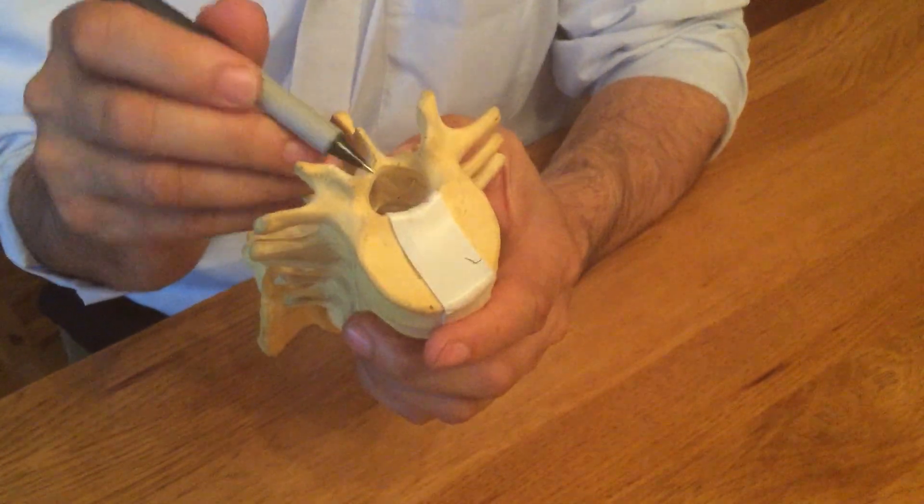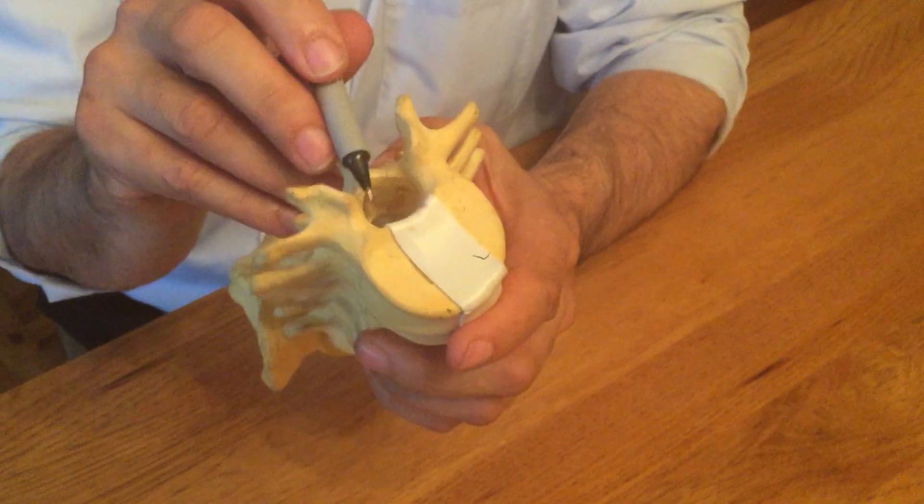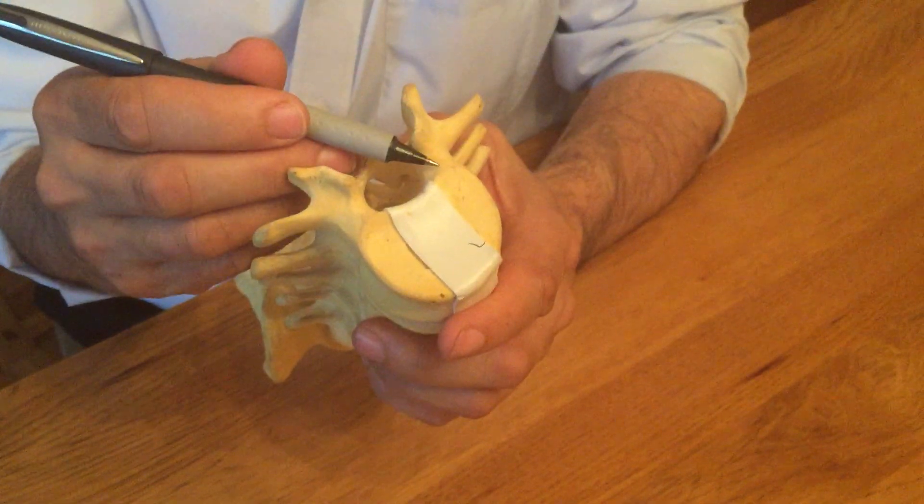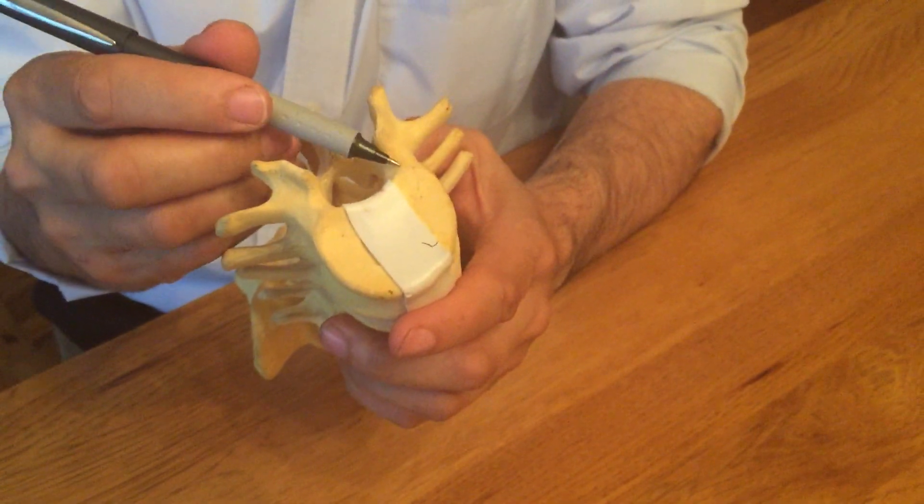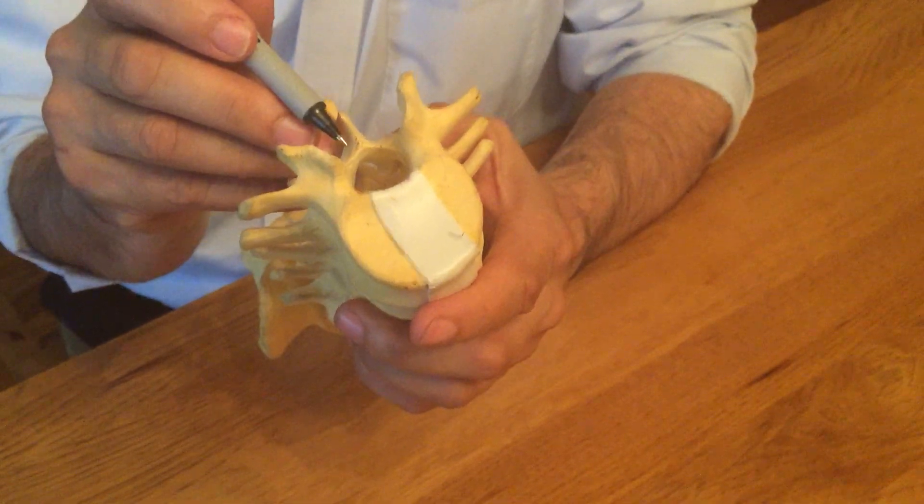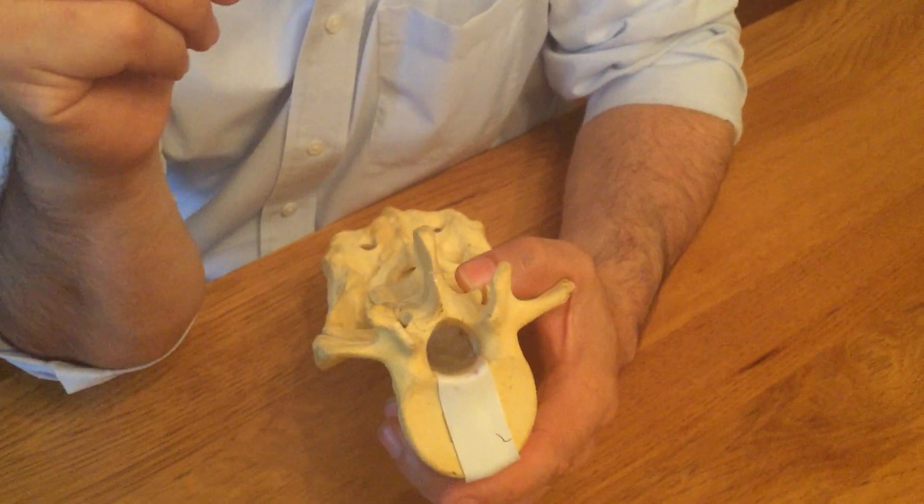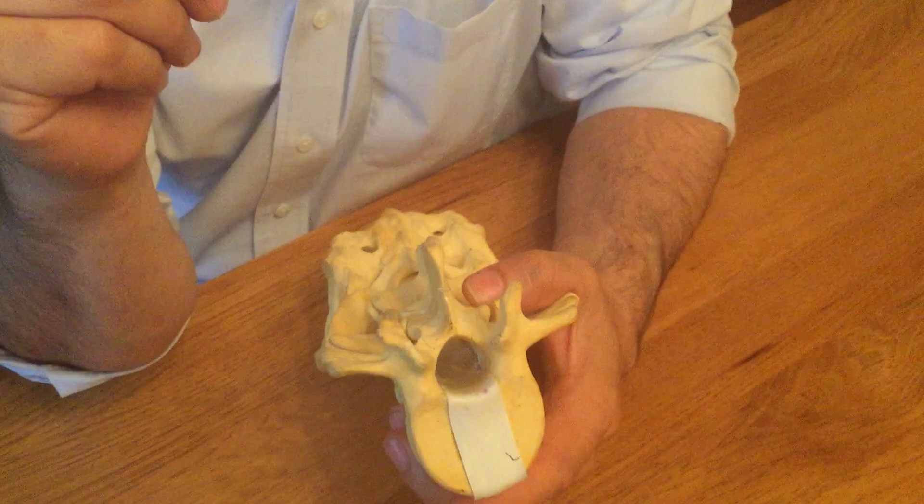So practically we go from one side, we open the central canal, foramen on the same side, foramen on the other side, and achieve a total decompression by an incision that is less than an inch—practically two-thirds of an inch.